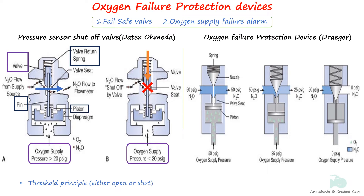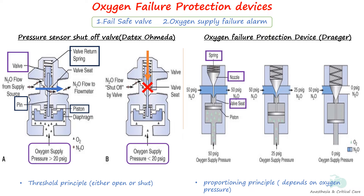The oxygen failure protection device used in Draeger machines works on a proportioning principle rather than a threshold principle, where the pressure of nitrous oxide falls in proportion to the decrease in oxygen pressure. The diagram illustrates a seat-nozzle assembly connected to a spring-loaded conical tapered piston that adjusts the orifice through which nitrous oxide flows. The two diagrams on its left show how nitrous oxide pressure is reduced as oxygen supply pressure is reduced, with total cutoff occurring at pressures less than 12 psig.